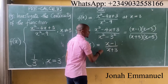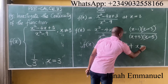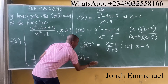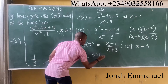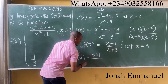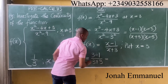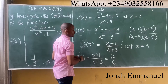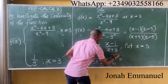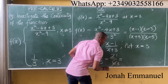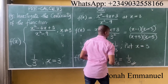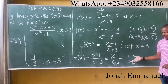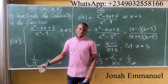The (x minus 3) factors cancel, reducing the function to (x minus 1) over (x plus 3). Now substituting x equal to 3 gives (3 minus 1) over (3 plus 3), which is 2 over 6. This simplifies to 1 over 3.